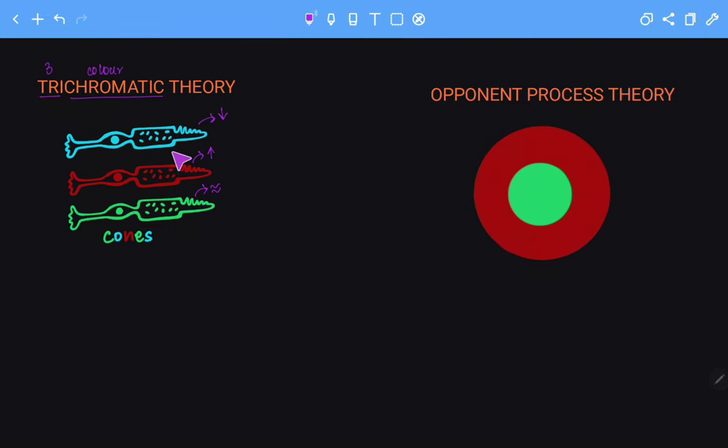Therefore, the blue cone is the most sensitive cone, while the red cone is the least sensitive cone. The trichromatic theory states that when wavelengths enter the eye, they will stimulate the three types of cones.